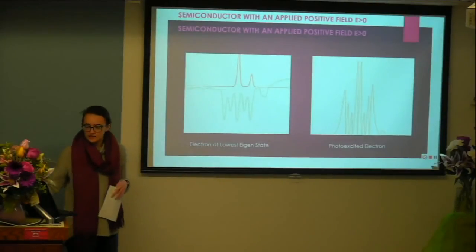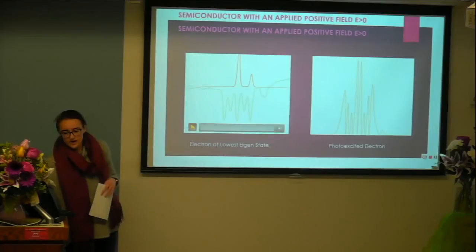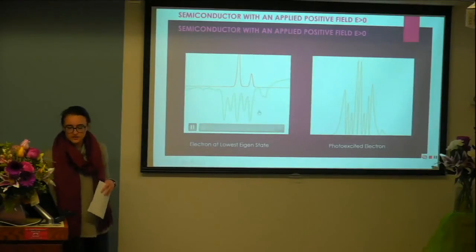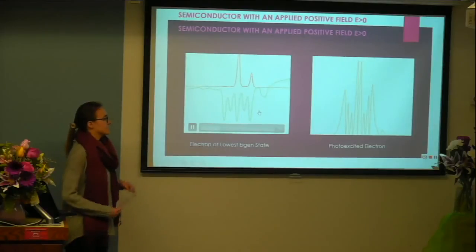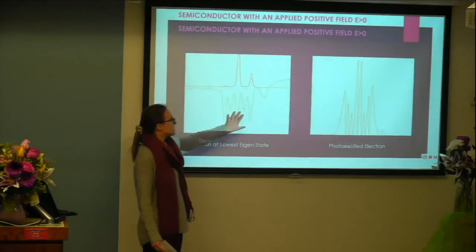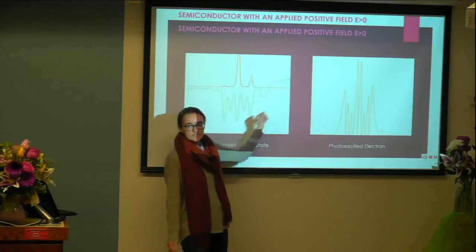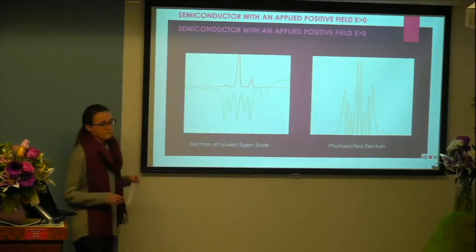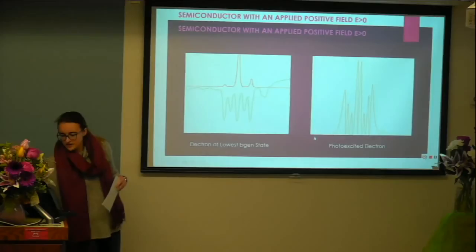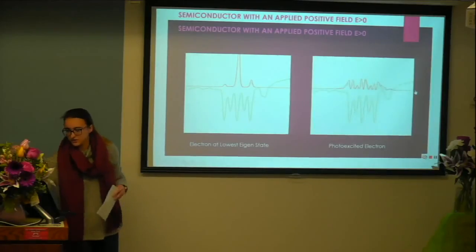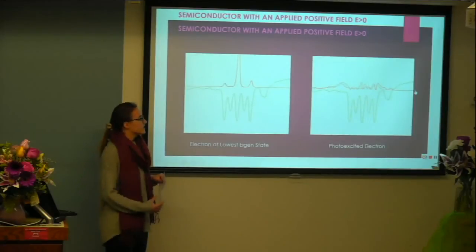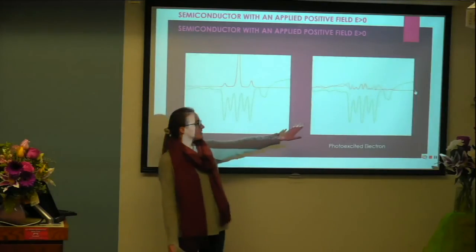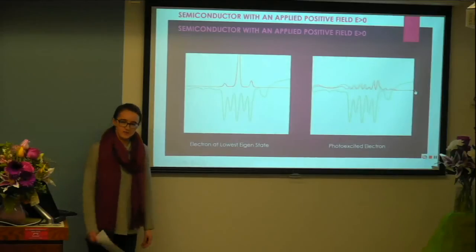So first, if you apply a positive field and you're at no excitation of the electron, the electron has a hard time moving outside of the semiconductor. To remind you, this middle section is our semiconductor, and then as we move this way, we get to our titanium dioxide accepting agent. Then once we excite the electron, here we've excited to a state of nine, we see a lot more motion of the electron, and it actually makes its way outside of the semiconductor and even starts to populate that accepting agent.